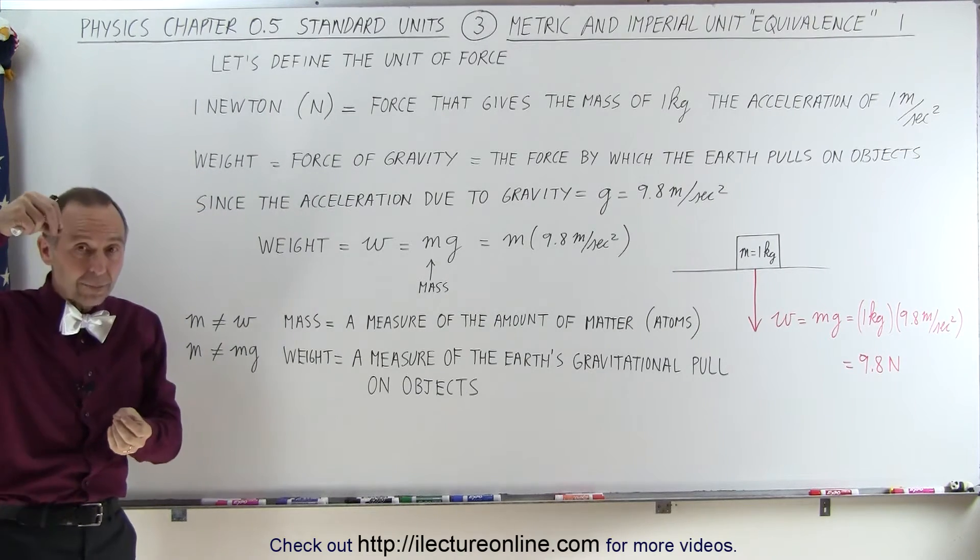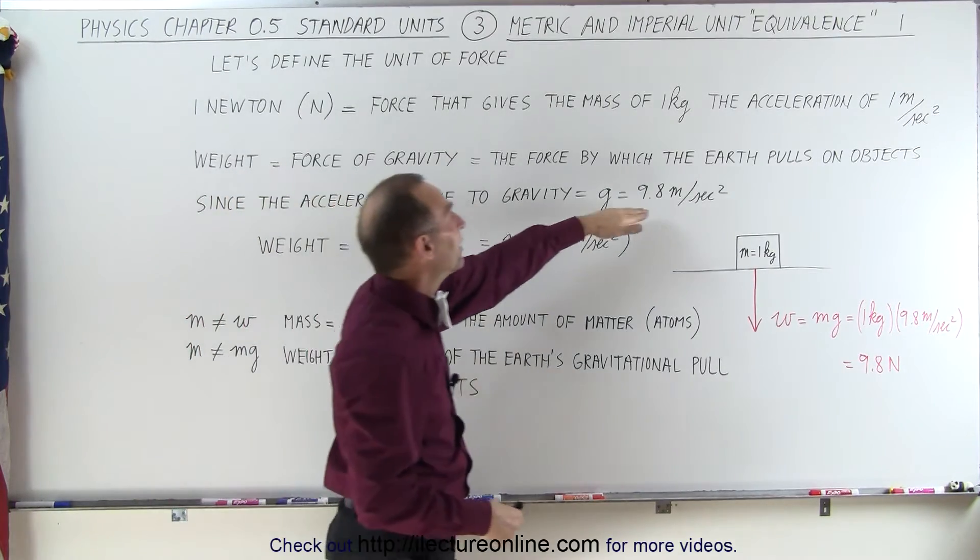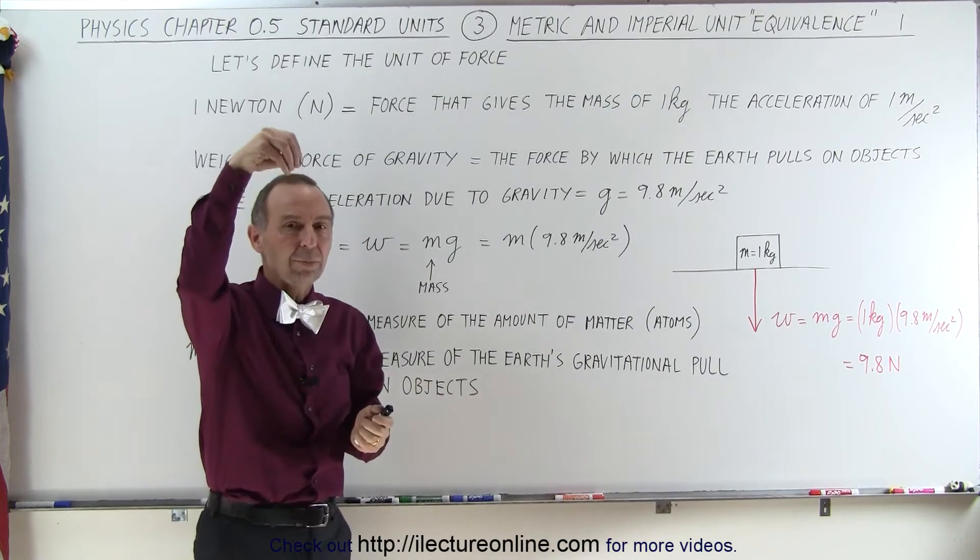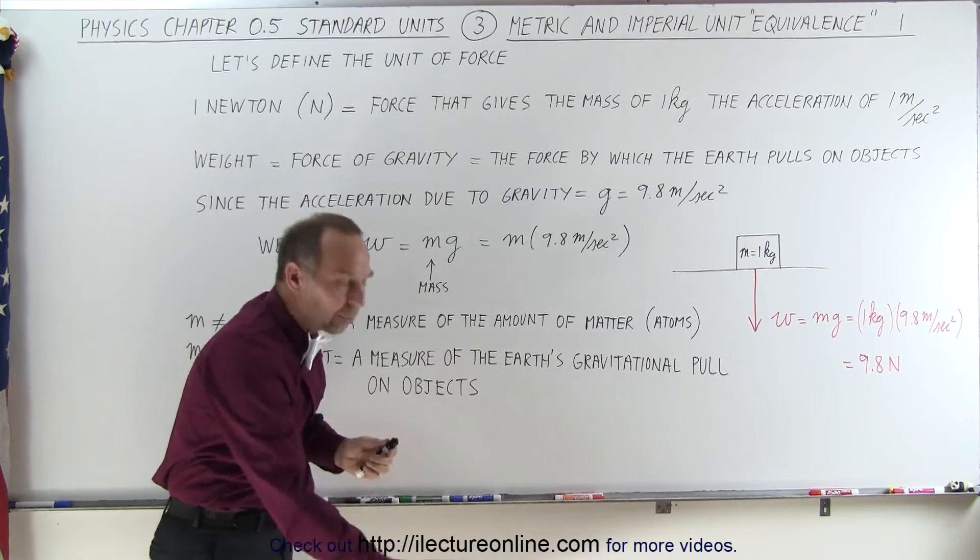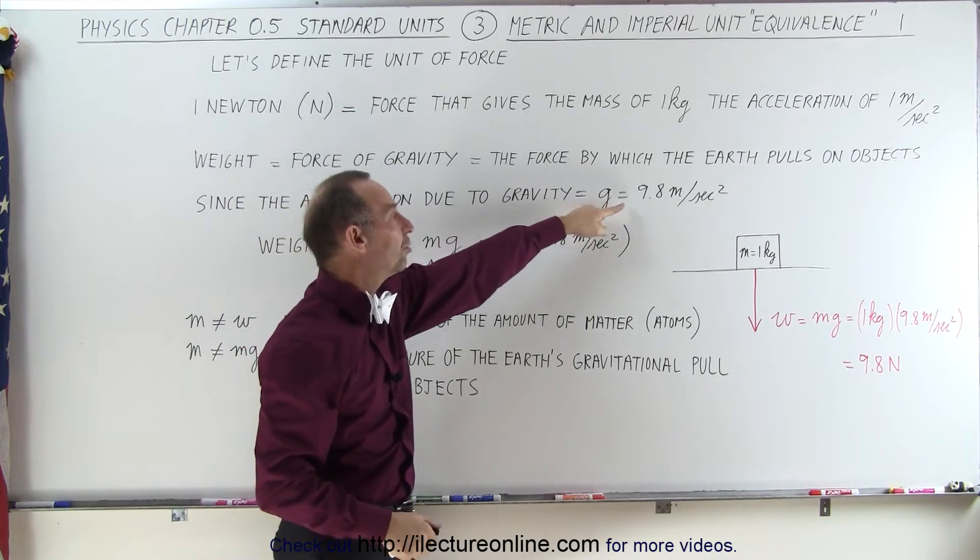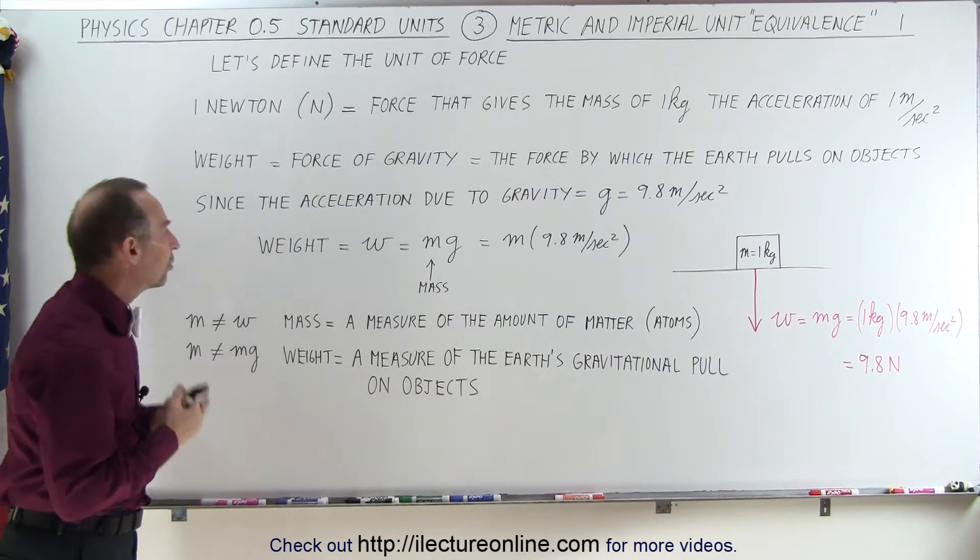Since, when we drop an object, we can measure that the acceleration due to gravity is 9.8 meters per second squared. So any object that is dropped above the surface of the Earth will accelerate towards the Earth at an acceleration equal to small g, which is known to be about 9.8 meters per second squared.